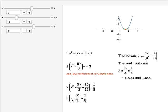This becomes 2(x - 5/4)² = 1/8. Therefore x = 5/4 ± 1/4, which gives two values: x = 1.500 and x = 1.000.